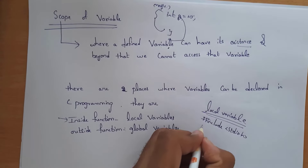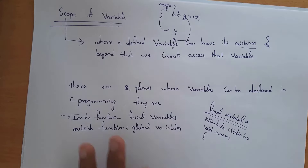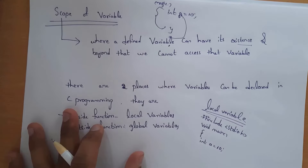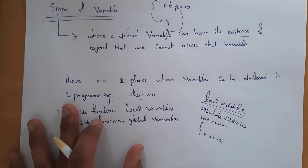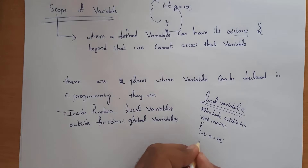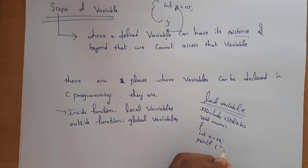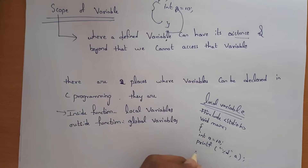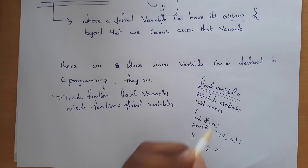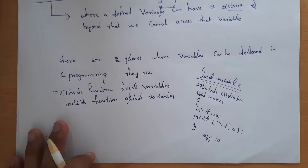I will give an example of a local variable. First you need to write #include stdio.h, after that void main. Inside the main function I am declaring variable int a equal to 10. Now I want to print value 10, so I use printf with %d and a. By writing this code I will get output as 10. This variable a is a local variable.